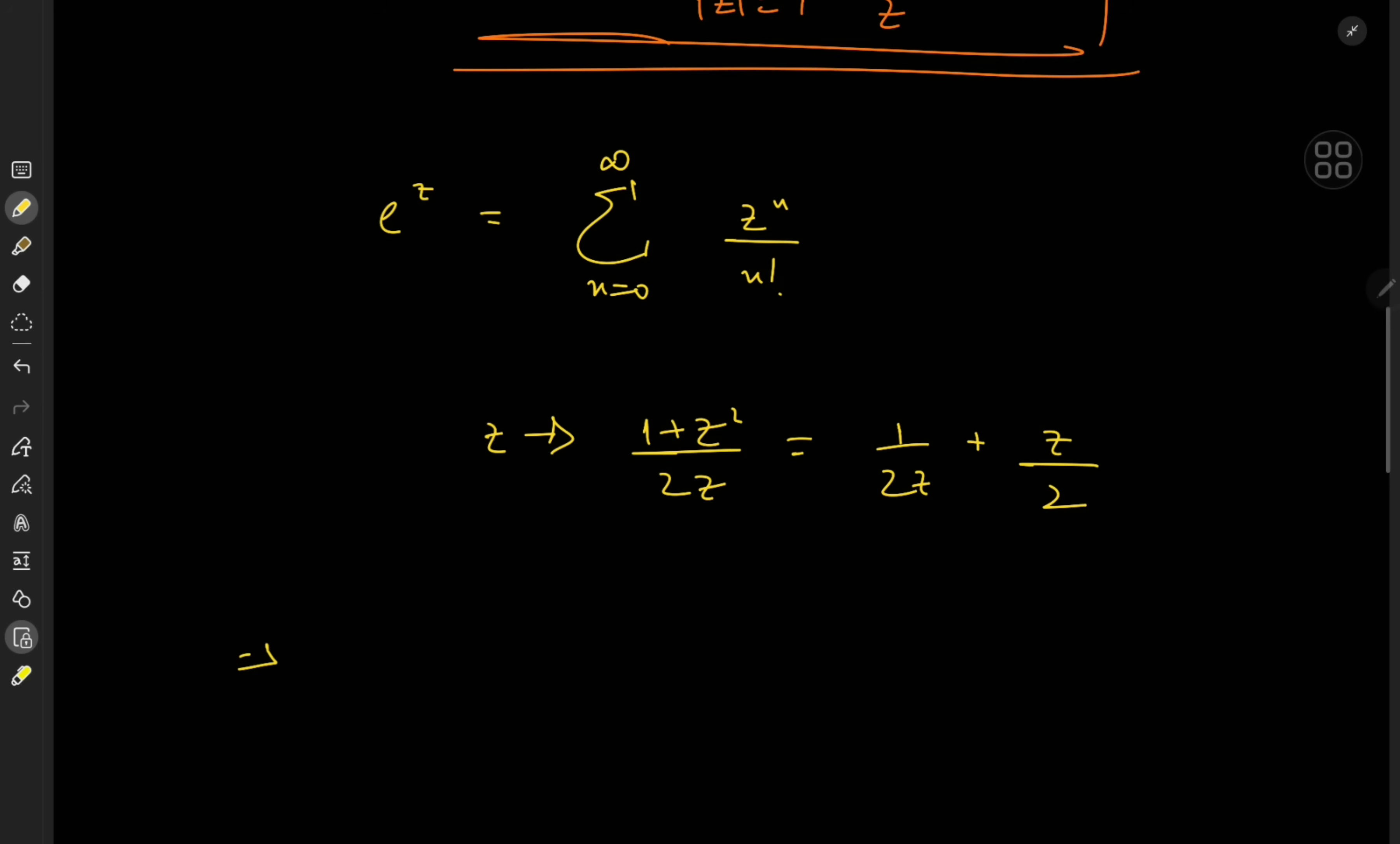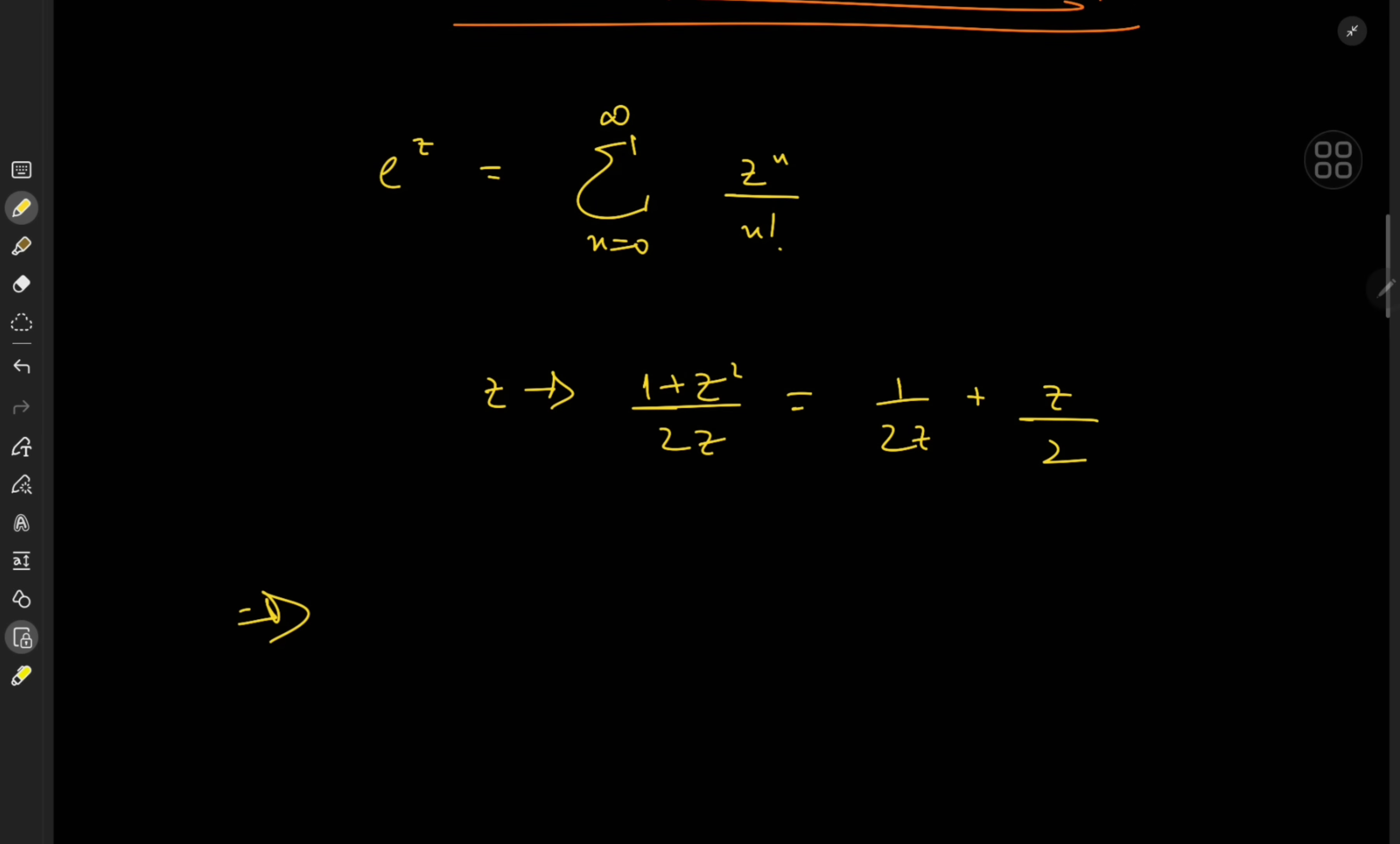So this implies that the function in our integrand, or one of the functions anyway, that is e^((1 + z²)/(2z)), equals the sum over n from 0 to infinity of 1/n! · (1/(2z) + z/2)^n. And I know that doesn't really seem very encouraging, but we can invoke a binomial expansion here to make our lives just a bit easier.